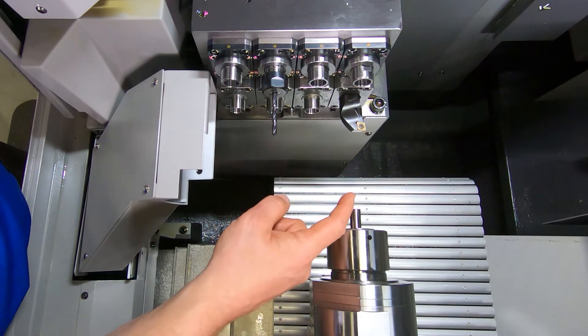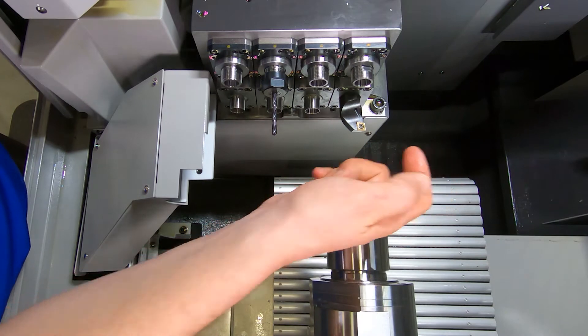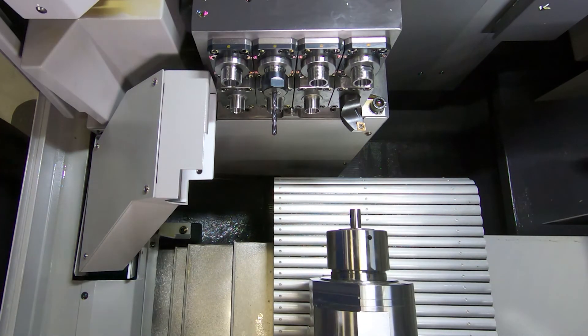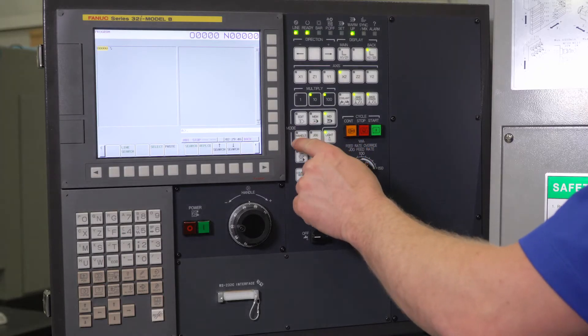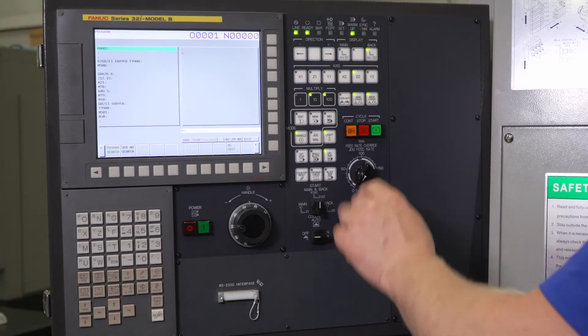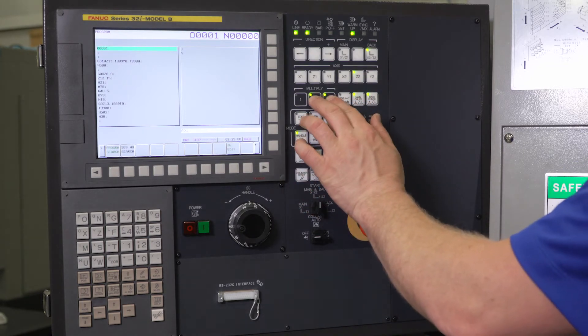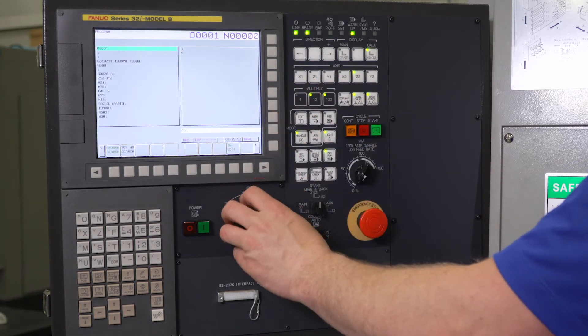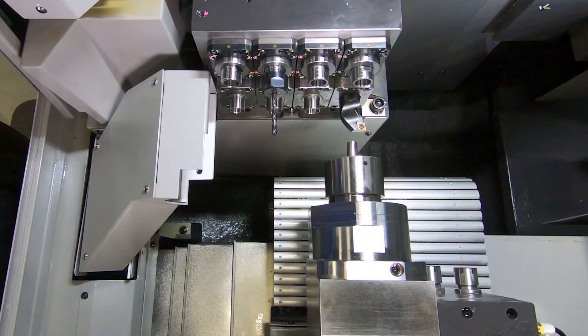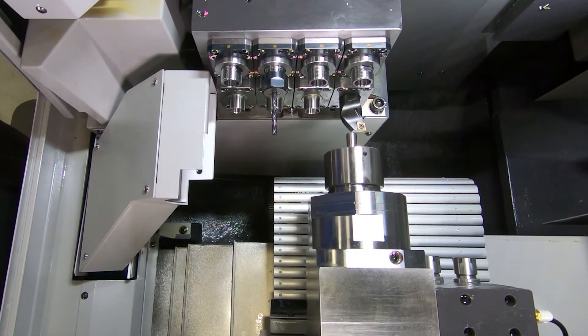So I'm actually on center. You can see my tool tip is obviously way off center, but we're going to correct that when we touch it off in X. So for now I'm going to handle my Z2, and right now my multiplier is all the way up. I'm going to carefully handle Z2 in the negative direction and get fairly close to the tip of my tool.